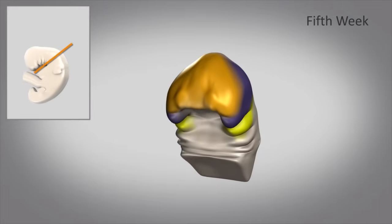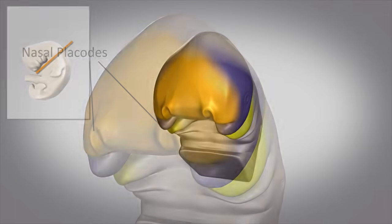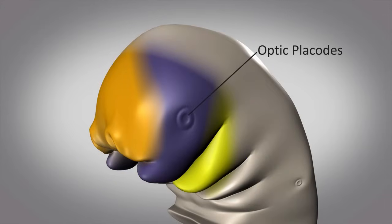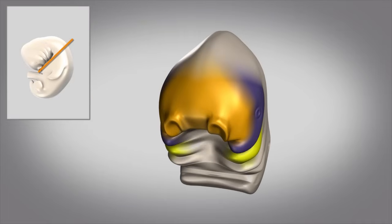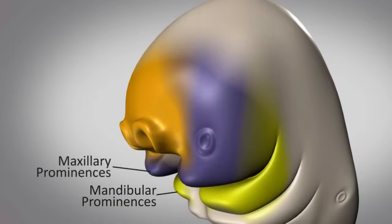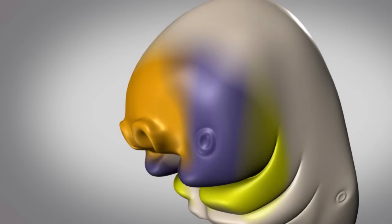In a five-week-old embryo, the nasal placodes, which will go on to become the olfactory system, and the optic placodes, which will become the lenses of the eyes, will form. In addition, the maxillary and mandibular prominences enlarge and grow forward and towards the middle, eventually giving rise to the upper and lower jaws, respectively.